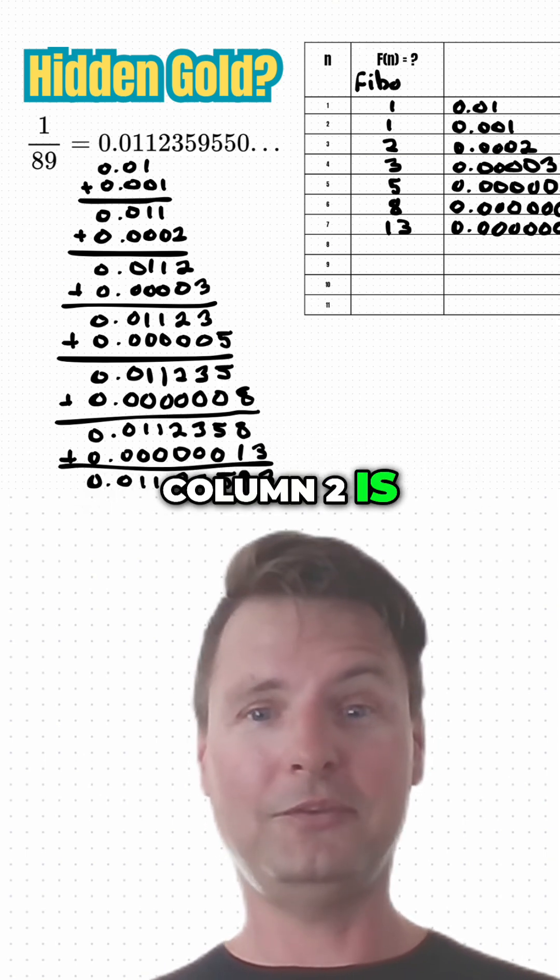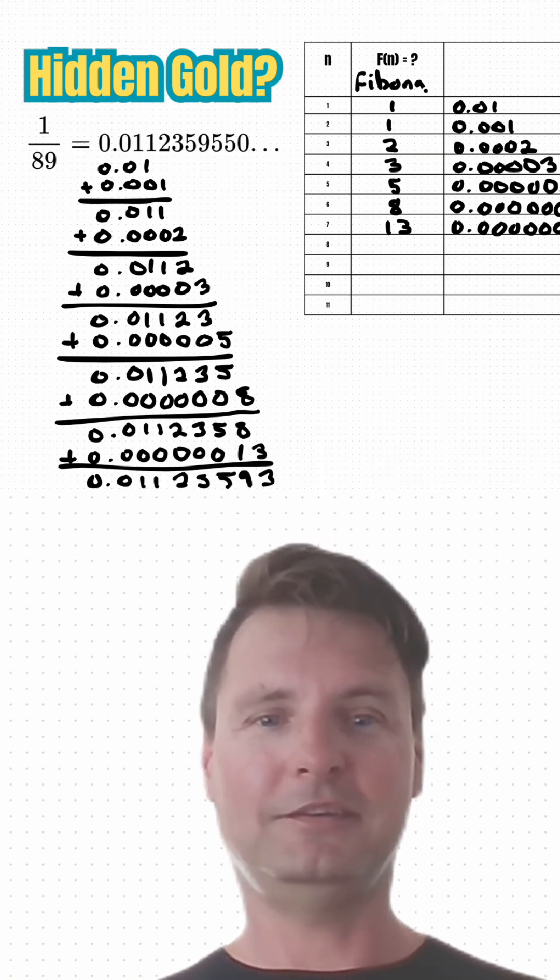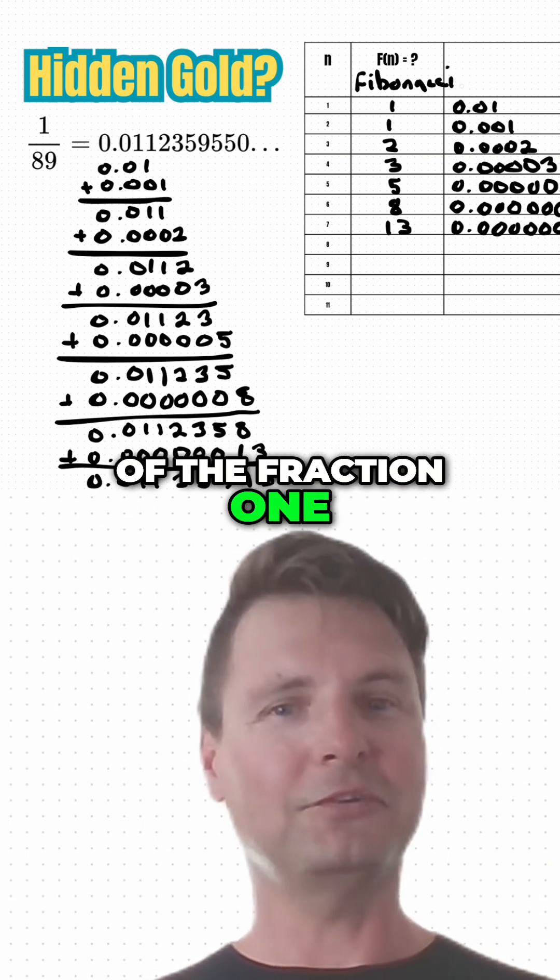Column two is the Fibonacci sequence. Yep, it's Fibonacci hiding inside of the fraction 1 over 89.